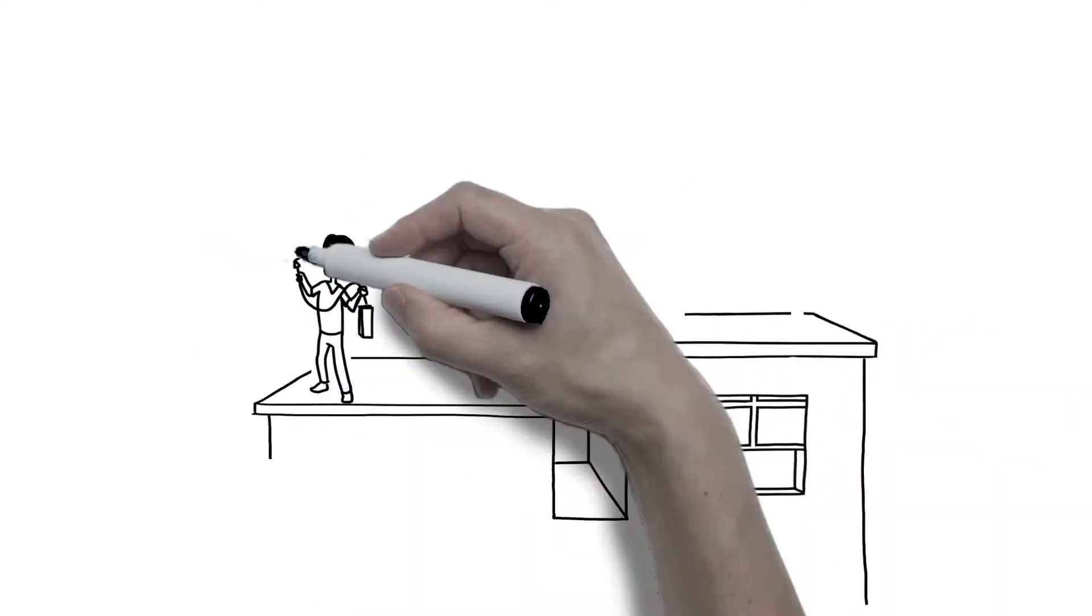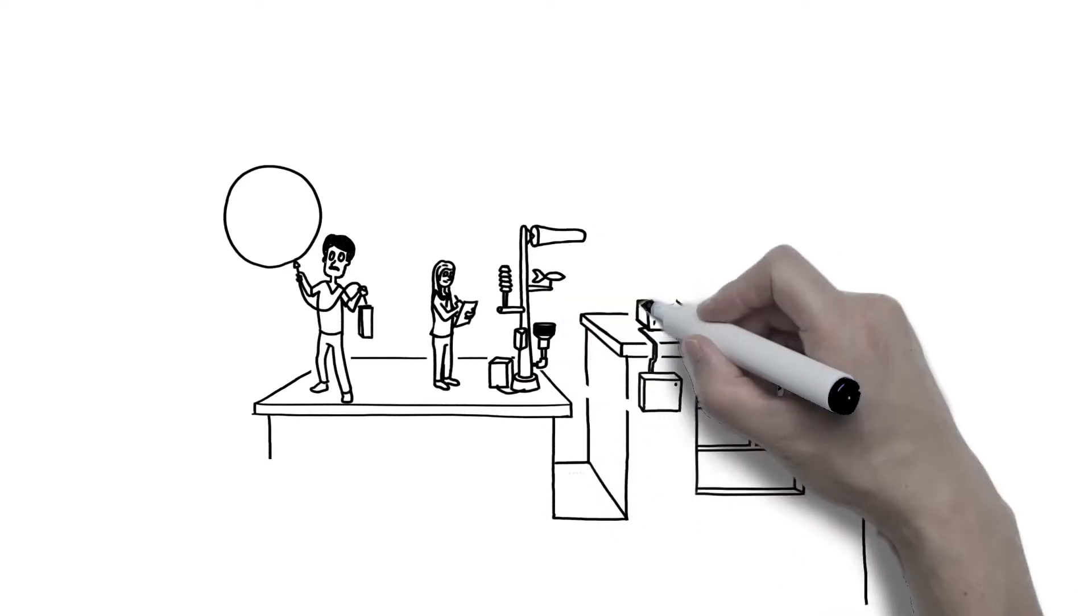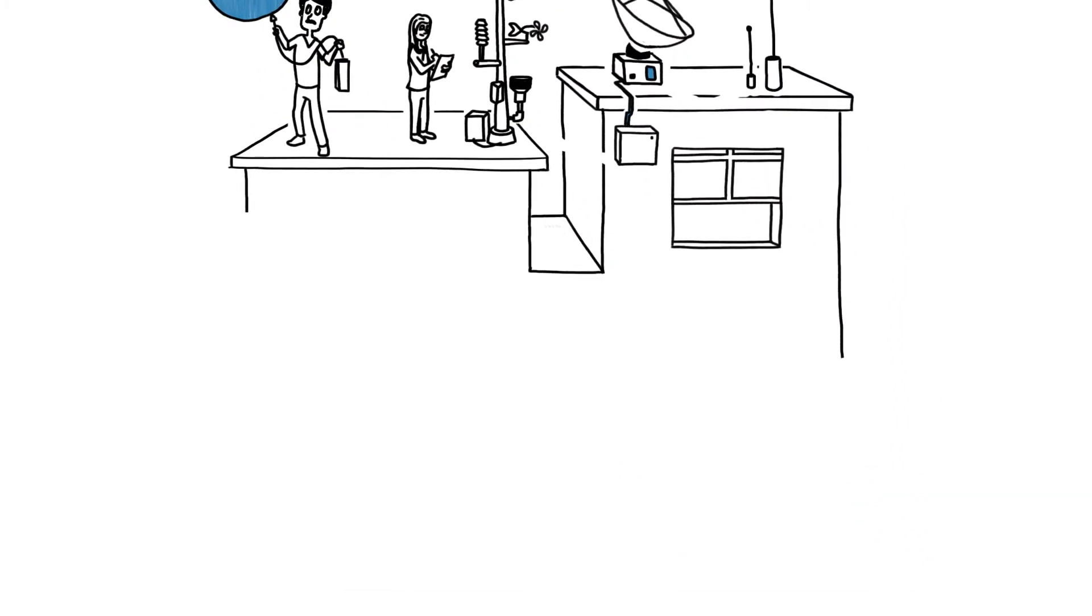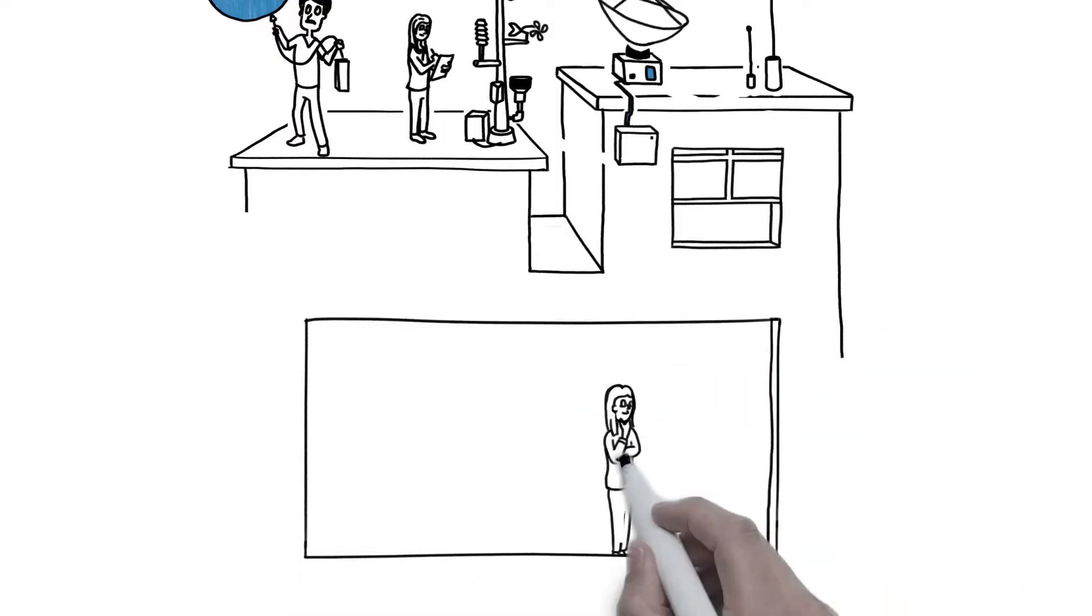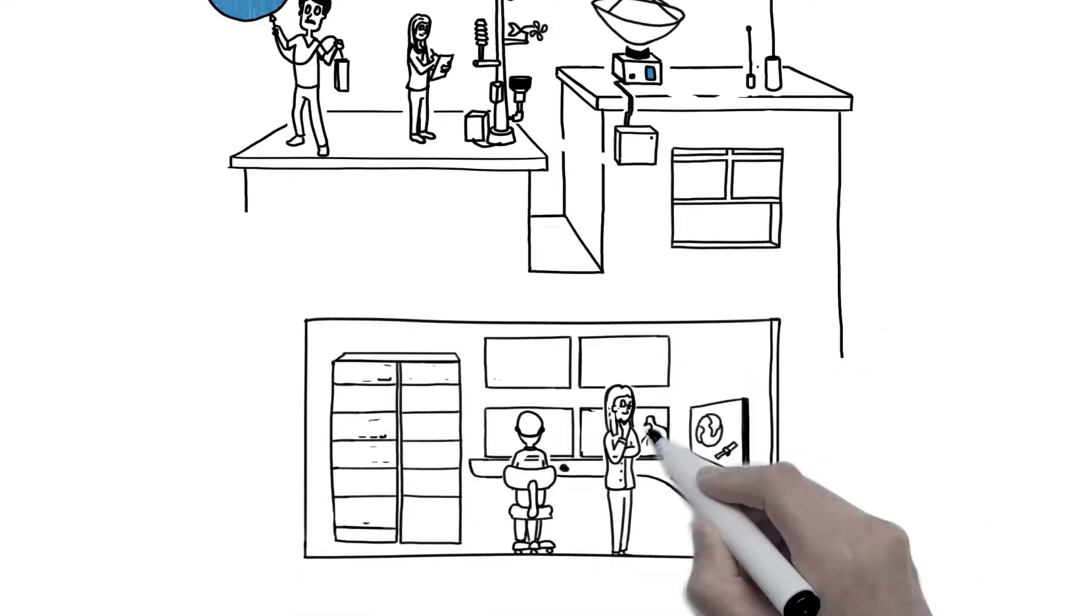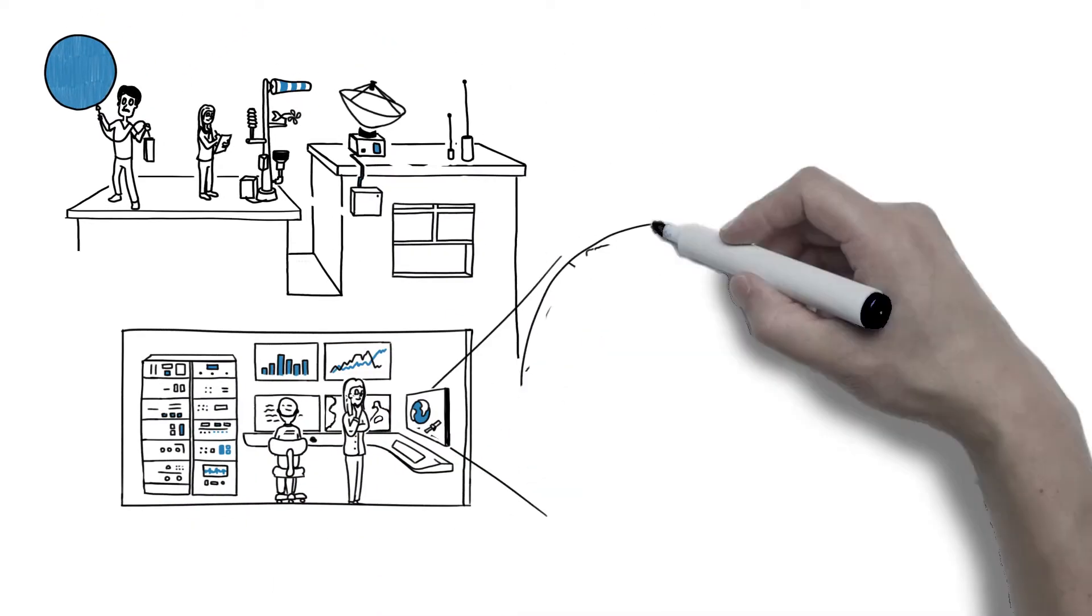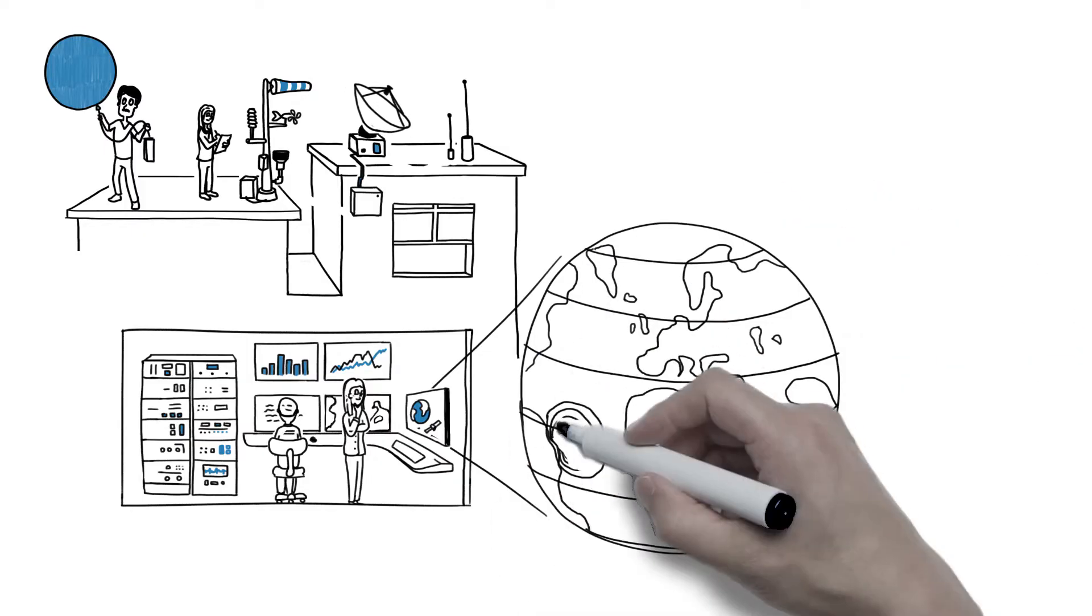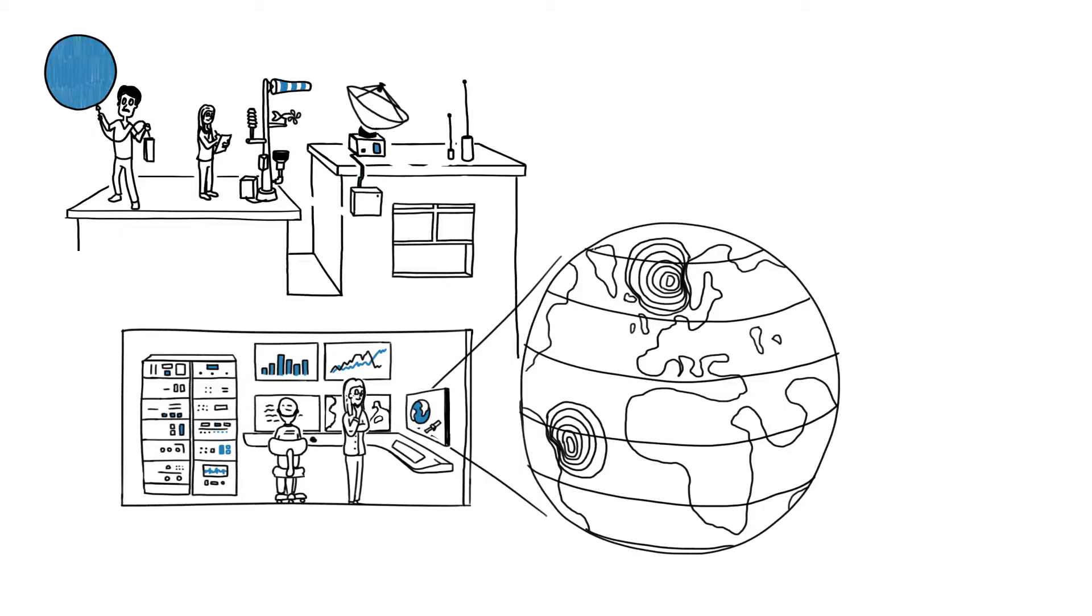Today, advances in science and technology allow us to gather detailed observations using a host of modern measuring instruments. Some of the most powerful computers in the world are used to run sophisticated models of how the Earth's atmosphere interacts with the ocean, the land, and the water cycle to produce our weather and climate.